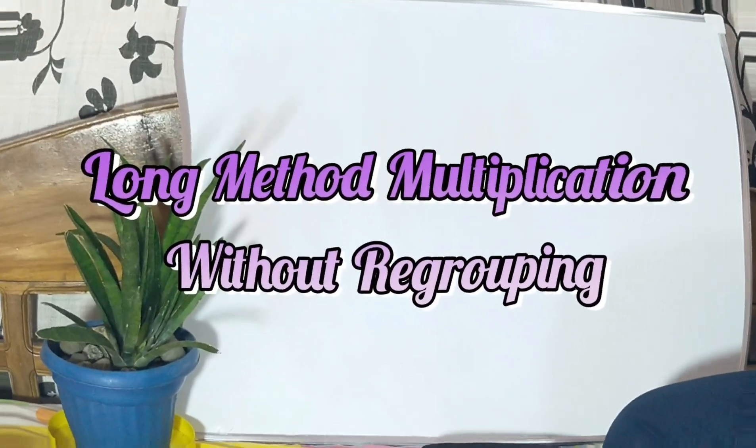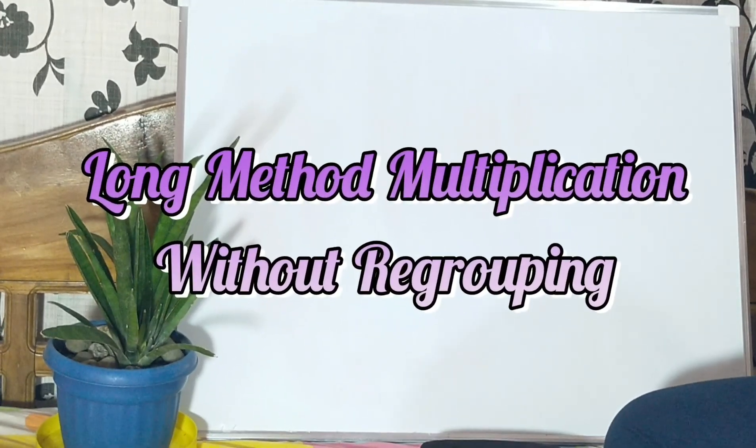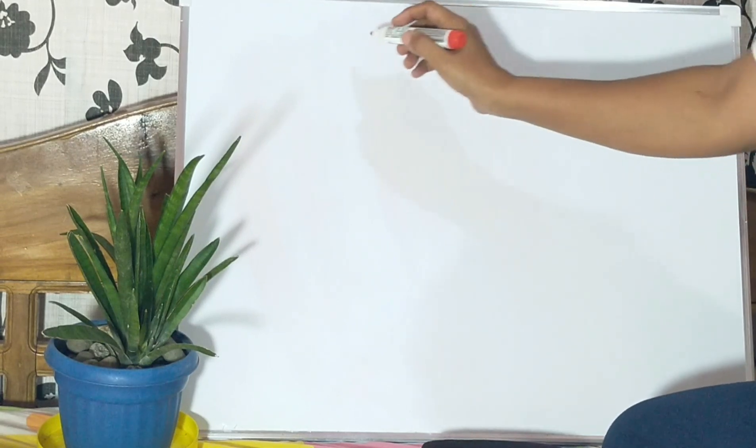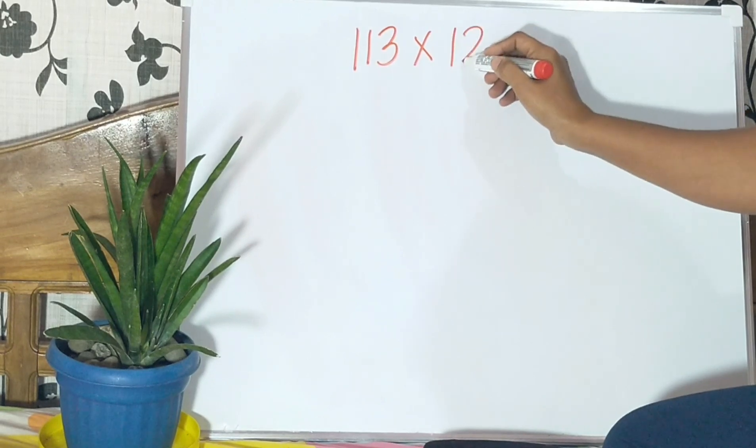Multiplication of 3-digit numbers by 2-digit numbers without regrouping using the long method. For example, we have 113 multiplied by 12.